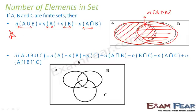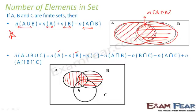Let's visualize this. All elements in A are represented with vertical lines. All elements in B are represented with horizontal lines. And the elements in C — the third set we will add — are represented with a star mark. So everything marked with a star is the number of elements in C.